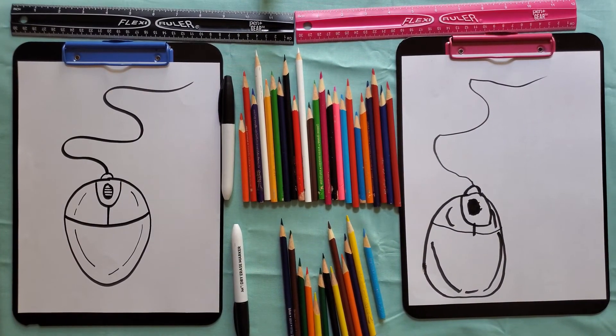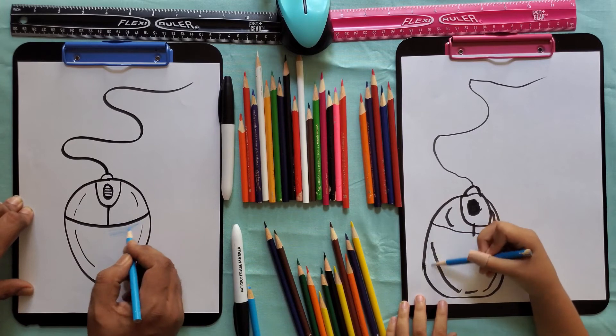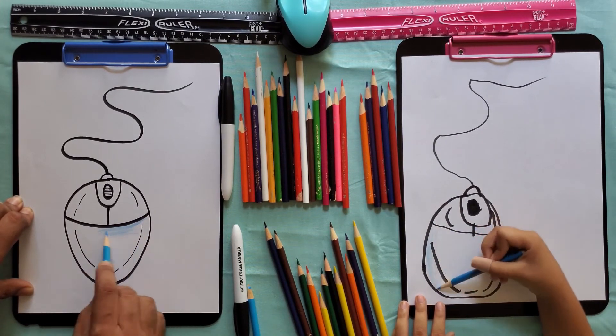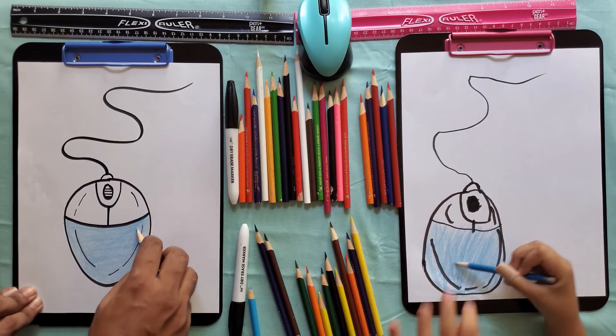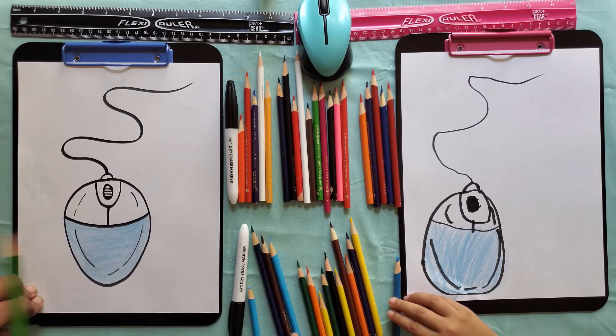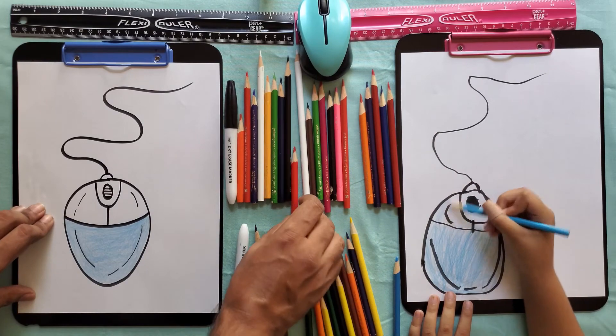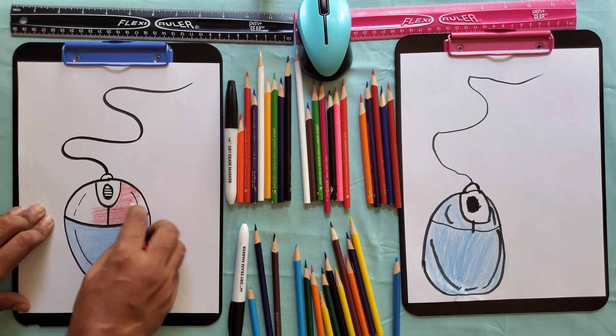Now it's time to color. Next we'll color these parts. Actually I need this in color. I'm done now. I'll wait for my dad.